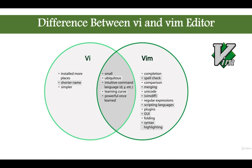VI is installed in many places, has a shorter name, and is simpler to use. The combined features for both VI and VIM are that both are small and ubiquitous — meaning available on many operating systems — with an intuitive command language, a learning curve, but very powerful once you learn it. Whether you learn VI or VIM, you will have that power. VIM has a lot of new features listed on the right-hand side.